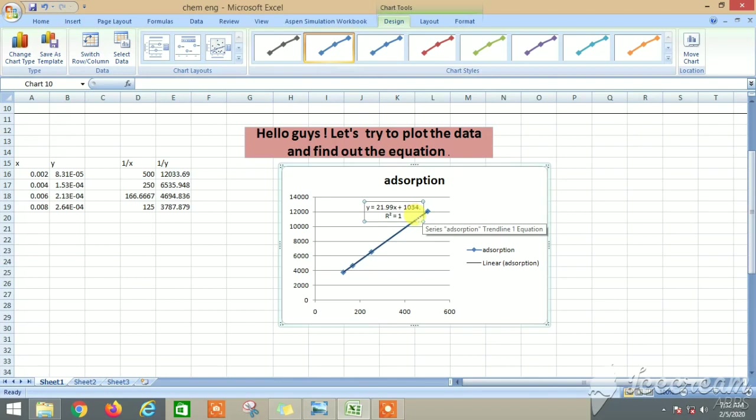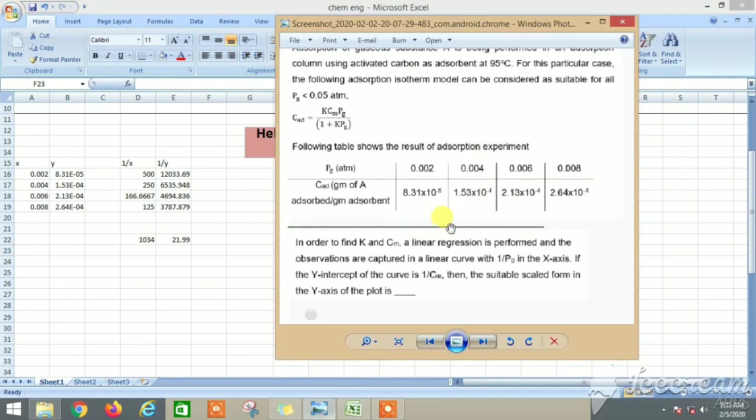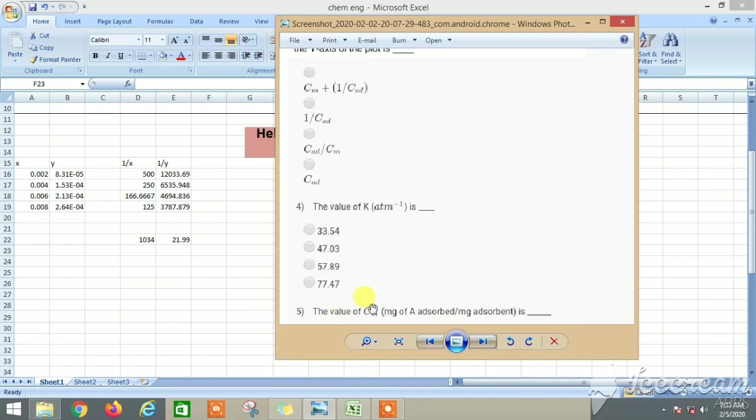As you can see, this is our equation. For this we have got the value of intercept and slope. So our intercept is 1034 and our slope is 21.99. With this data we can actually get the value of K and the value of C_m, which comes out to be... value of K comes out to be around 47.